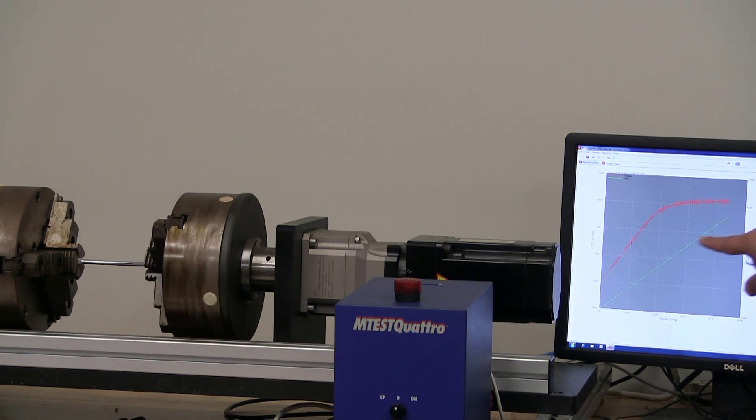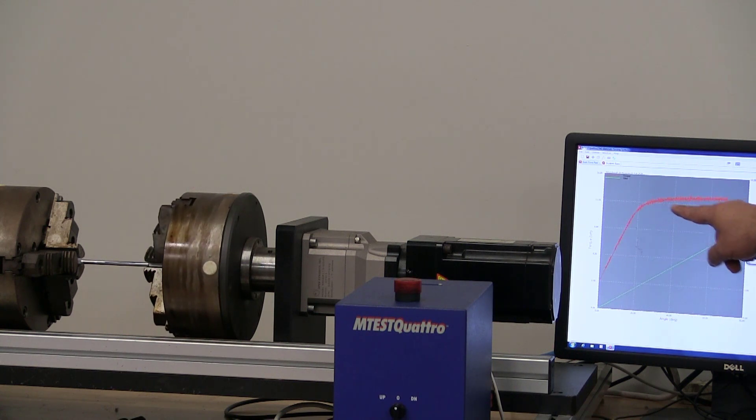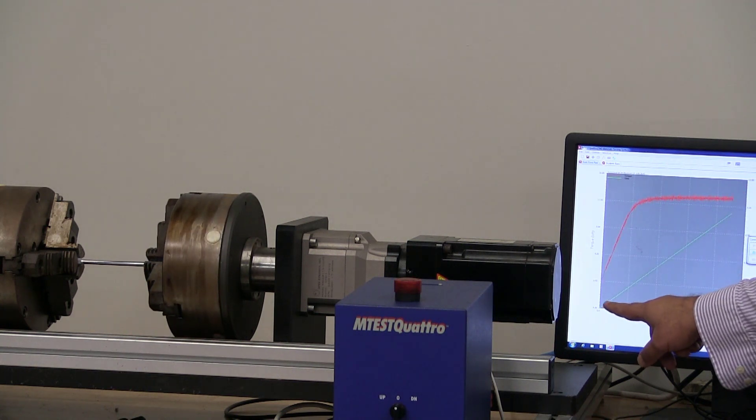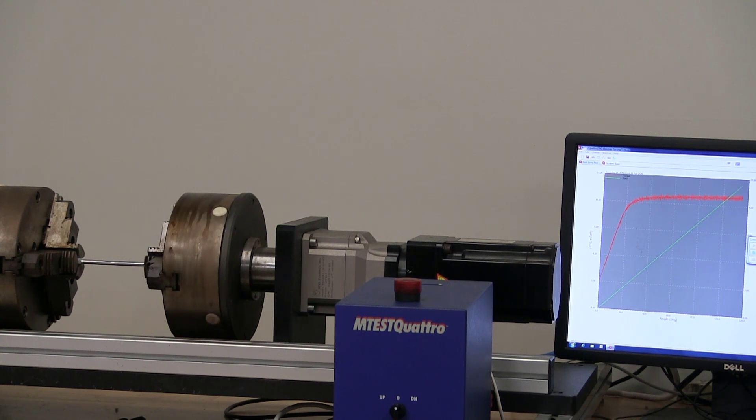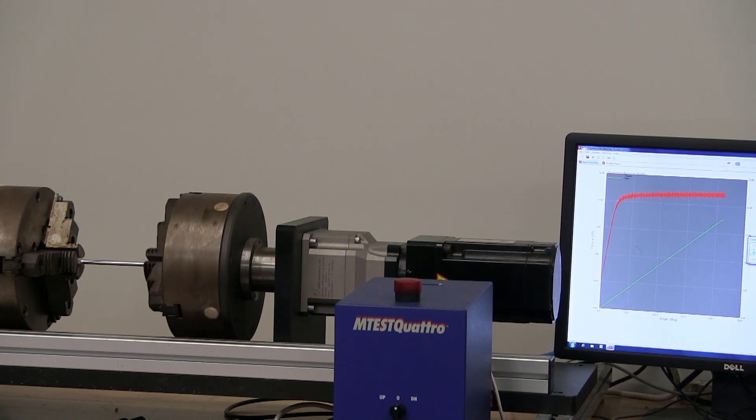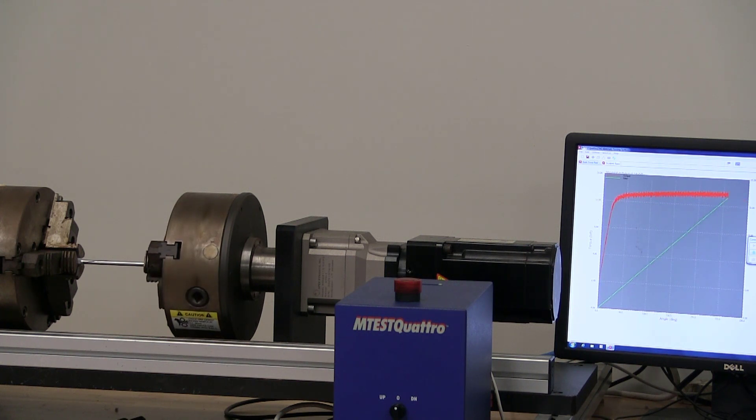There you can see the torque went up until the specimen yielded. This is the twist angle continuing to go up linearly. If you notice over there, that chuck is going round and around and around. We are already to twist angle of 250 degrees and it's still going.